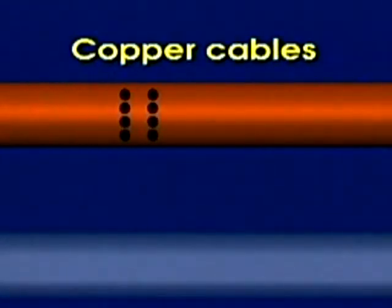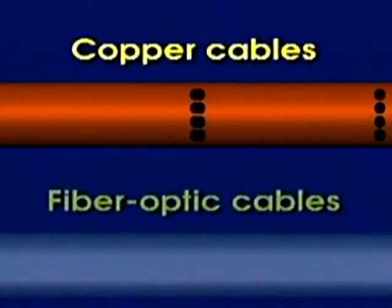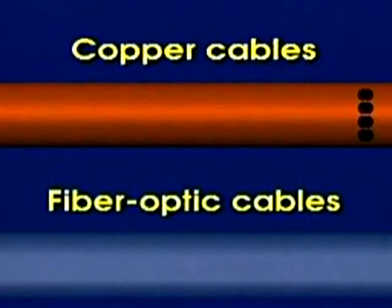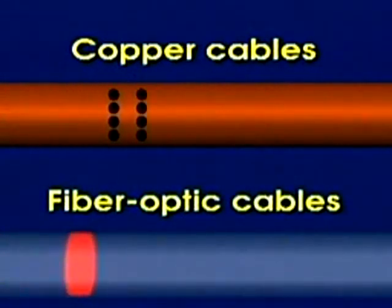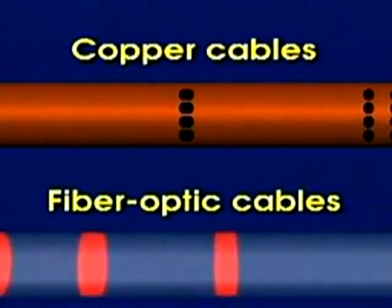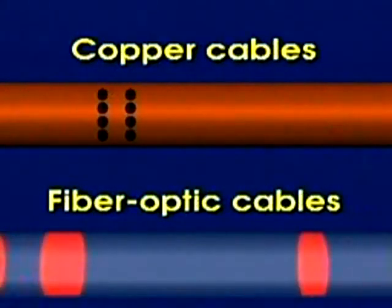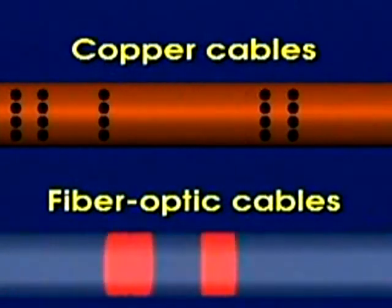There are two main types of telephone cable. In one type, copper cables, telephone messages travel as electric signals along wires. In the other type, fiber optic cables, telephone messages travel in the form of pulses of light through bundles of hair-thin glass fibers.